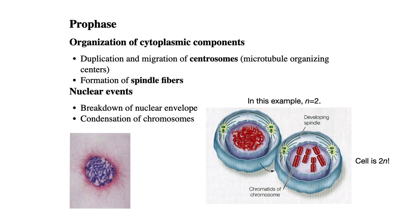We're also going to get the condensation of the chromosomes, as I mentioned previously. Everything's going to get supercoiled and appear. In this little diagram, I tell you this cell is 2N — it's a diploid cell. How many chromosomes are in our sample cell? Four. There are 4 chromosomes in this model cell.